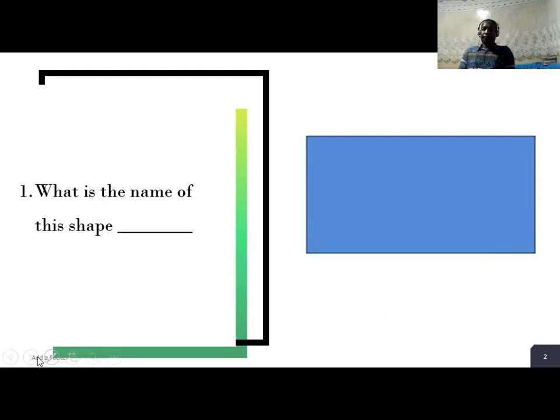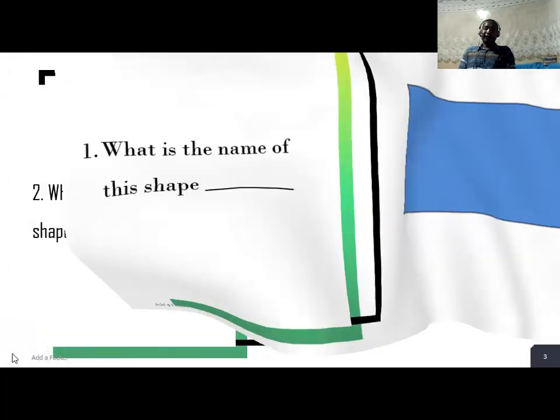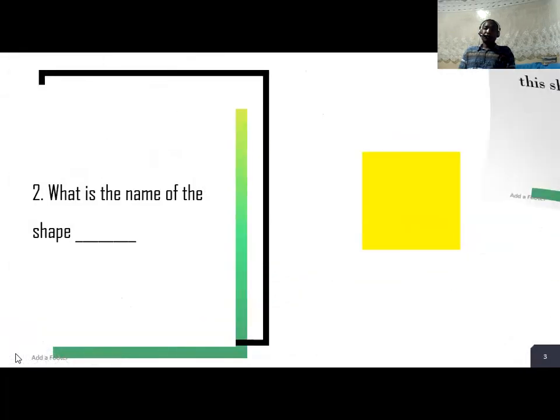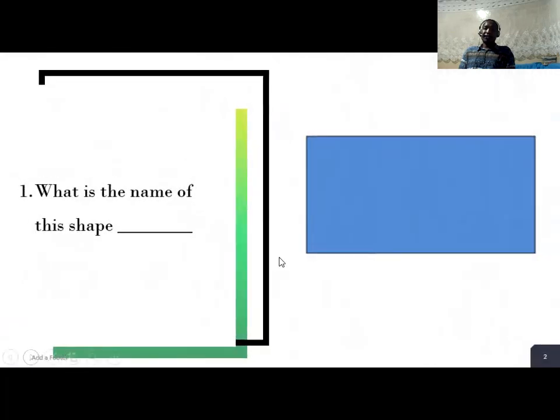Number one, what is the name of the shape? The shape is the one with this blue color. So you're able to tell me what shape is that. That is the shape. Write for me the name of that shape.